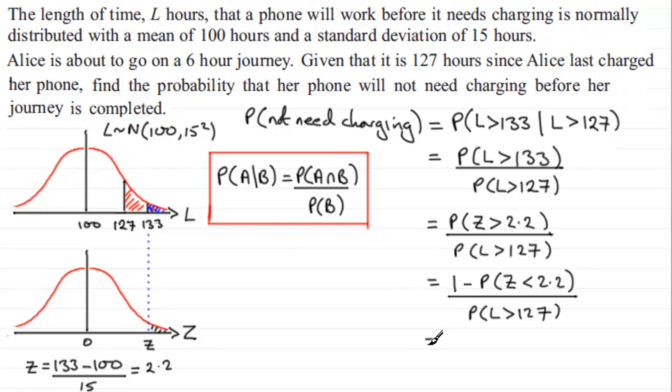Now if you look up in your tables, the probability of Z being less than 2.2, you'll find you'll get 0.0139. And we worked out the probability of L being greater than 127 in an earlier part to this question. We found it to be 0.0359. So all we need to do is just do that sum, and you'll find you get 0.3871 and so on, which if we round to 3 significant figures equals 0.387.